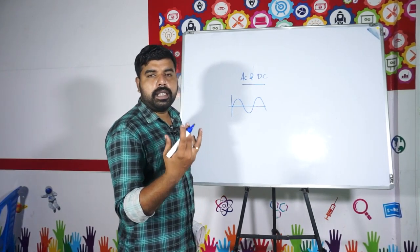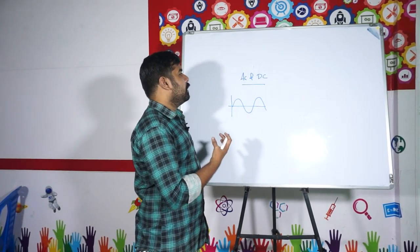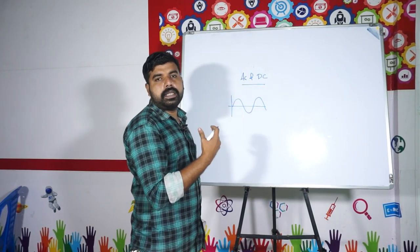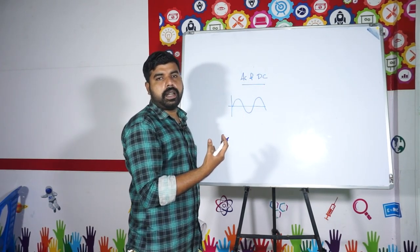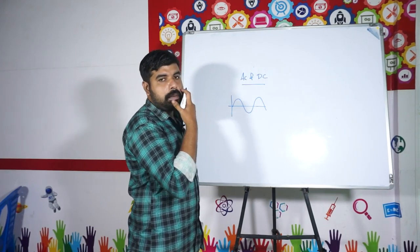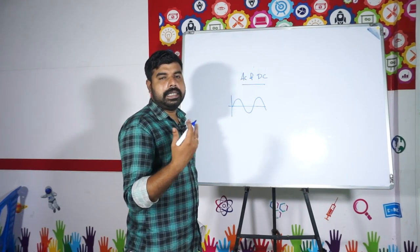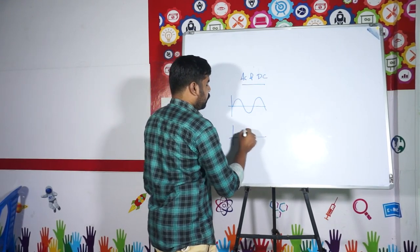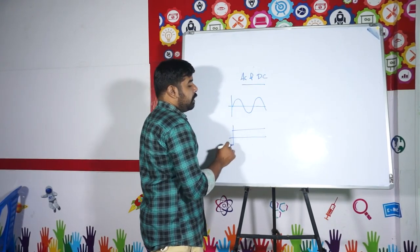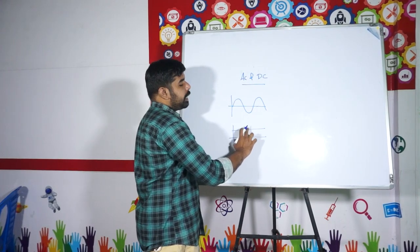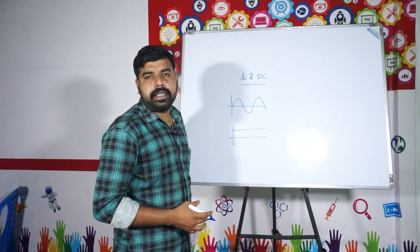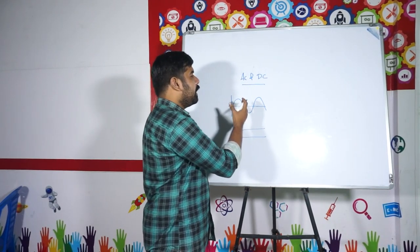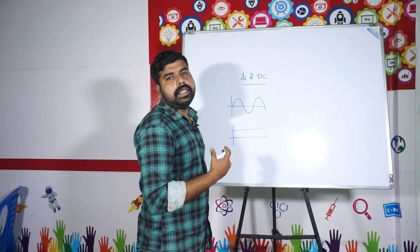Now we will discuss AC and DC in detail. The current which varies with time is AC current. The current which does not vary with time is known as DC current.